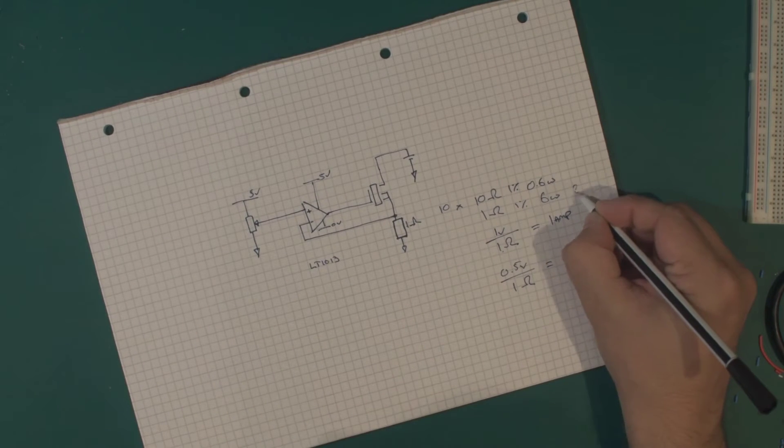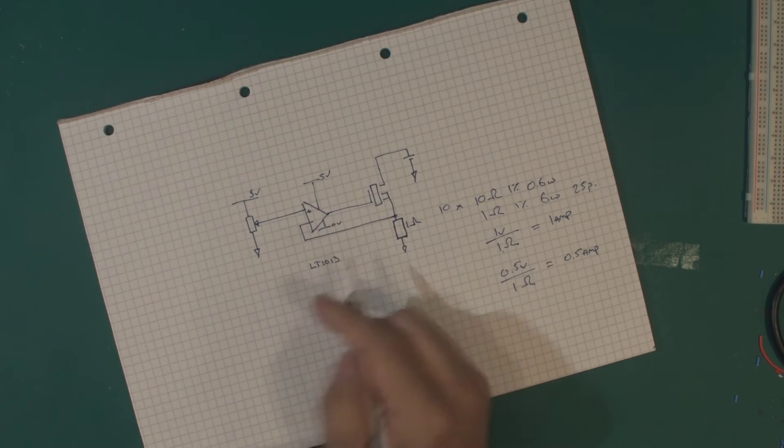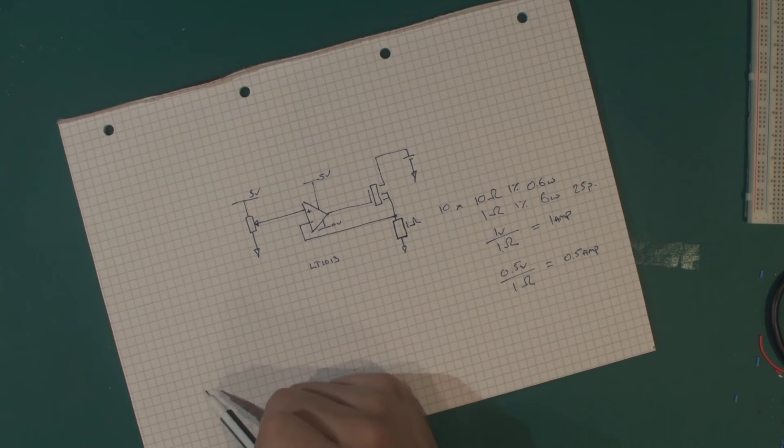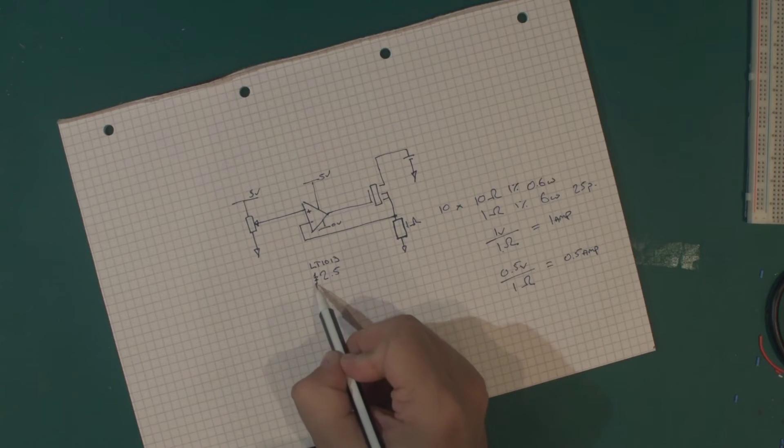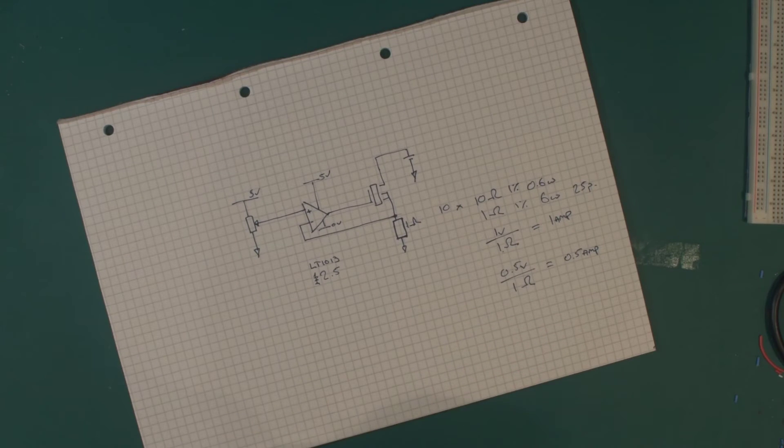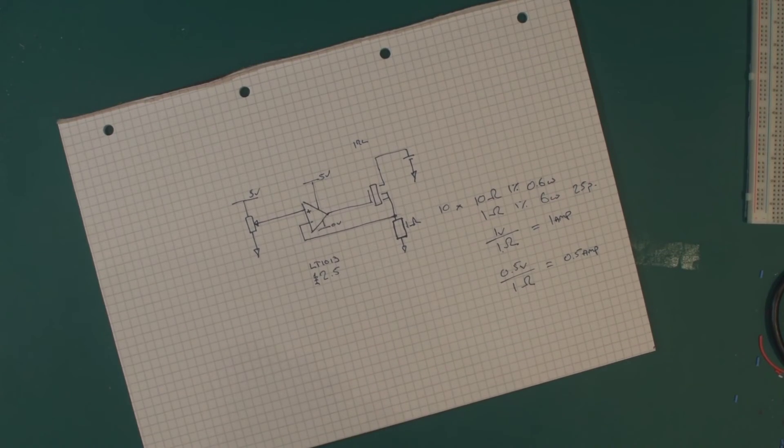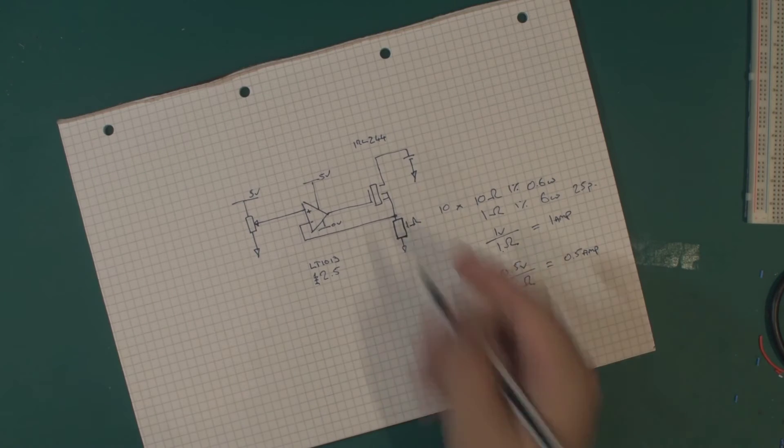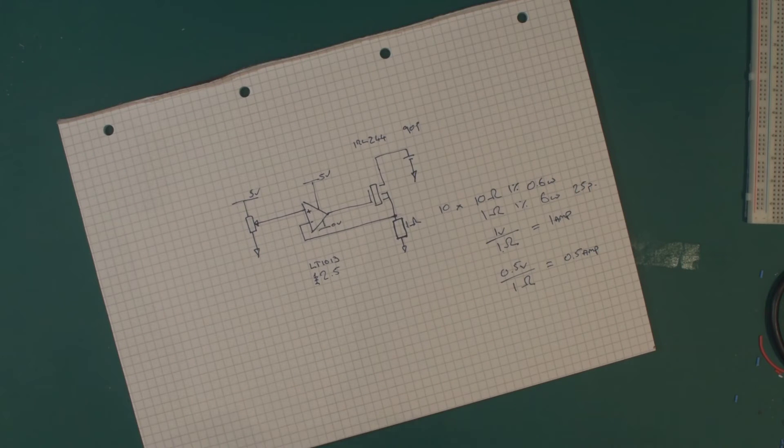The LT1013 is a high precision op-amp and because it's higher precision it is a bit more expensive at around two pounds fifty. Finally, I'm going to be using the IRLZ44 MOSFET on the output, which comes in around 90 pence. So a total of around four pounds for the whole component bill of materials.